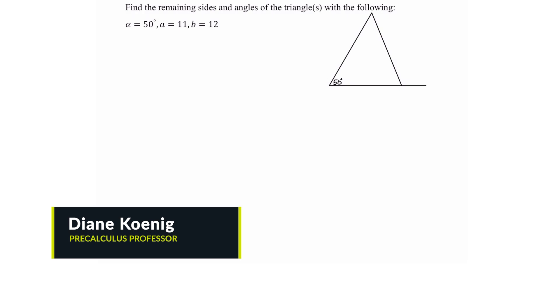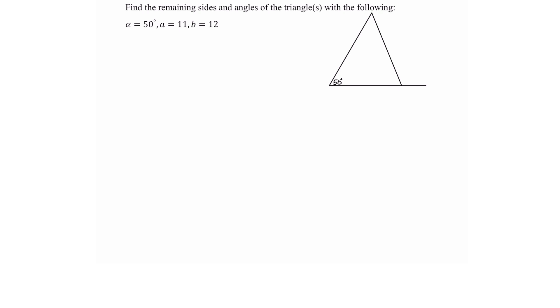Thank you for joining me. What we're going to look at in this video is finding the remaining sides and angles of a triangle with the following: alpha is equal to 50 degrees, a is equal to 11, and b is equal to 12. Notice we have one angle and two sides.